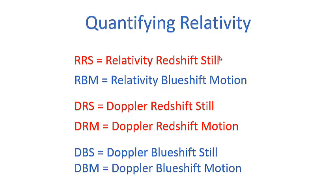To summarize my codes: RRS = relativistic redshift for the object in stillness. RBM = relativistic blueshift for the object in motion. DRS = Doppler redshift for an object in stillness. DRM = Doppler redshift for the object in motion. DBS = Doppler blueshift for an object in stillness. DBM = Doppler blueshift for the object in motion.